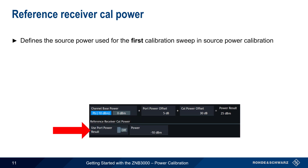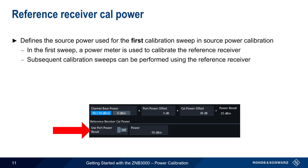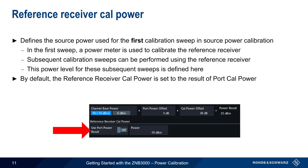Underneath the channel base power settings is reference receiver CalPower, which defines the source power to be used for the first calibration sweep in source power calibration. An RF power meter or sensor is used during this first sweep to calibrate the reference receiver. Subsequent calibration sweeps can be performed using only the reference receiver, and reference receiver CalPower defines the power level for these subsequent sweeps. By default, the reference receiver calibration power is set to the result of the port power calibration.